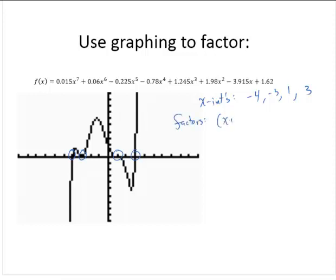Now I have to consider the behavior near the x-intercepts. At the first one, it appears to go straight through. When it goes straight through, that tells us that it has a multiplicity of 1. So (x+4) is to the first power.